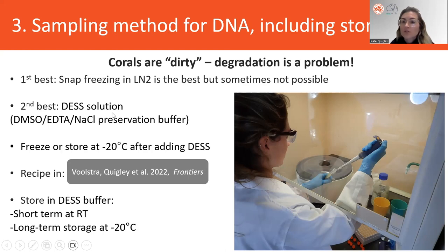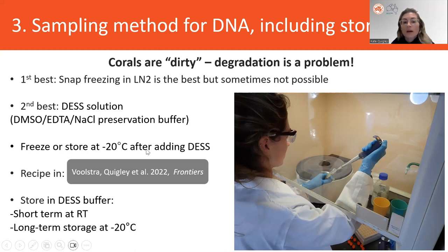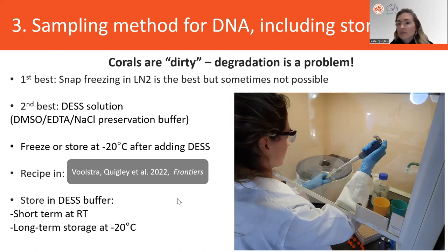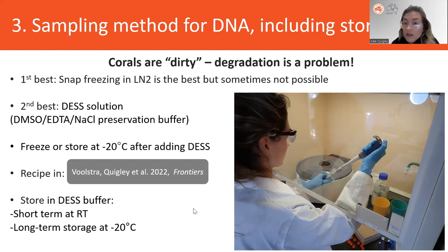Although snap freezing is the best storage method for reference genome material, sometimes the logistics make it impossible. The second best is to store in a DESS solution, which is a mixture of DMSO, EDTA, and a salt preservation buffer — more of a chemical storage. You can either freeze that or store it at minus 20°C after adding the DESS solution. That recipe can be found in the supplements. Long term, aim to keep it as cold as possible — aim for minus 20°C. If you're at a field station without that capability or on a boat, room temperature in the short term is okay, but get it into minus 20°C as quickly as possible.